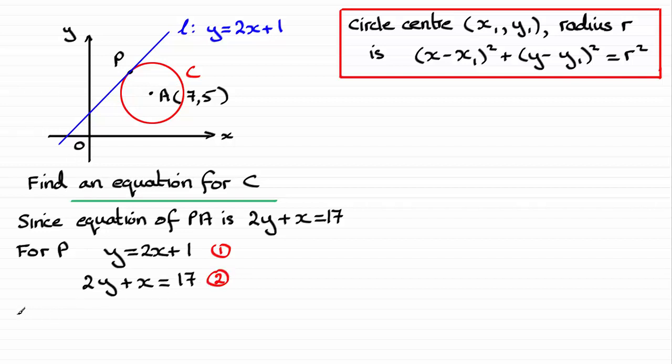Solving these simultaneously, all I need to do is substitute equation ① into equation ②. And if we do that, you're going to get 2 times the y, 2 times the 2x + 1, and that's going to be plus another x, and that's going to equal 17.